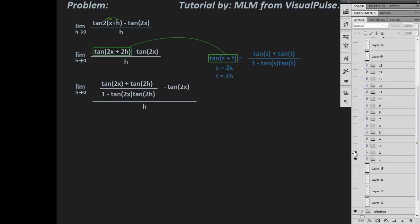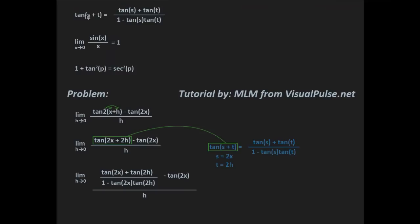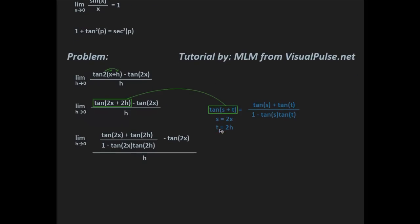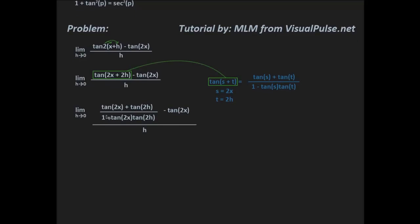Next, we have to use one of our identities: tangent of s plus t equals tangent of s plus tangent of t, all over 1 minus tangent of s times tangent of t. So our s is going to be 2x and our t is going to be 2h. So we end up with the limit as h approaches 0 of tangent of 2x plus tangent of 2h over 1 minus tangent of 2x times tangent of 2h, minus tangent of 2x, all over h.